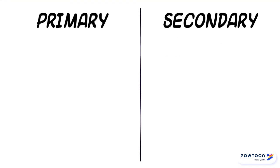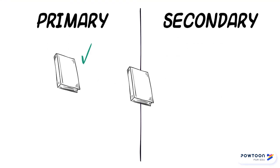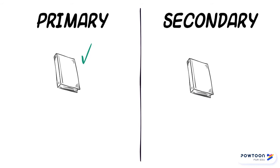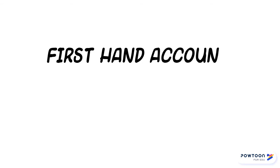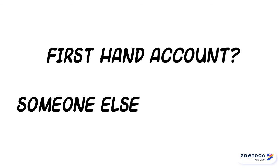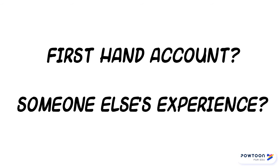While these distinctions may be obvious for some sources, others can be classified as primary or secondary depending on the context in which they are used. Asking yourself questions like, is the author providing a first-hand account of this event, and did the author draw from other people's work or experience to create this material, can help you determine whether a source is primary or secondary.